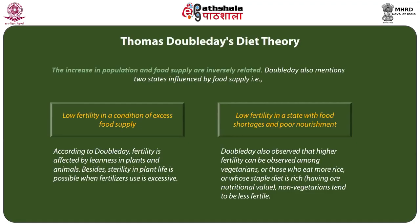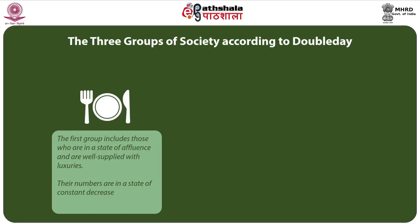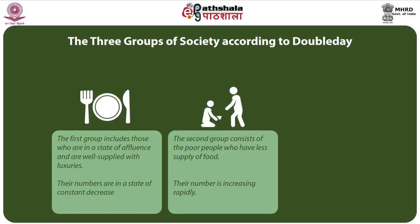Doubleday also mentions two states influenced by food supply: first, low fertility in a condition of excess food supply, and second, low fertility in a state with food shortages and poor nourishment. According to Doubleday, fertility is affected by leanness in plants and animals. An overfed plant can be revived only when depleted by ringing the bark, extreme lopping of branches, or trenching of the roots. Sterility in plant life is possible when fertilizer use is excessive. He also observed that higher fertility can be seen among vegetarians or those whose staple diet has lower nutritional value, while non-vegetarians tend to be less fertile.